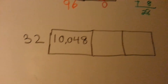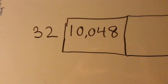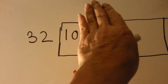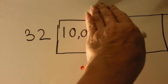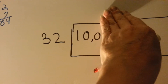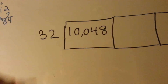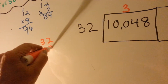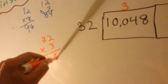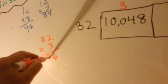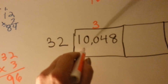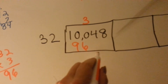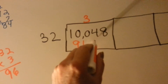Let's try it with this real big one here. So we know 32 can't go into 1 right here. It can't go into 10 either. Can it go into 100? Yeah, it can. I think it can go in 3 times. So what is 32 times 3? 3 times 2 is 6, 3 times 3 is 9 — 96. So underneath the 100 we're going to write the 96. And it's the 4 and the 8's turn to come down.